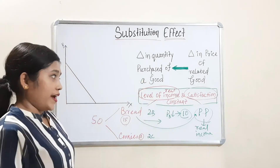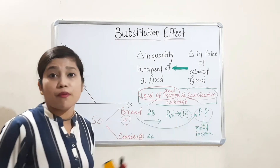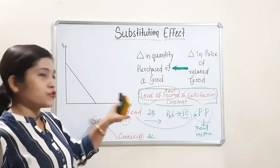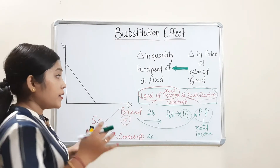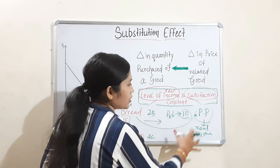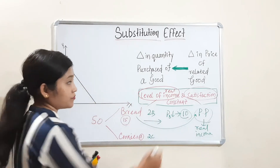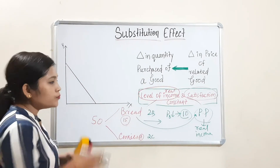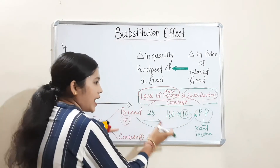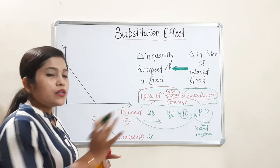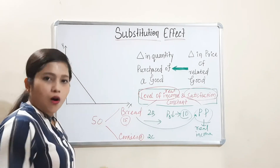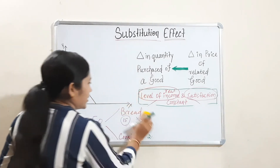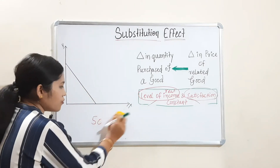To come to the substitution effect, we have to make this purchasing power constant. Here our purchasing power increased, so we increased the consumption of bread. But to arrive at substitution effect, we have to keep this purchasing power constant. To do that, we will increase one commodity and decrease another commodity so that it balances the purchasing power back to the original level.